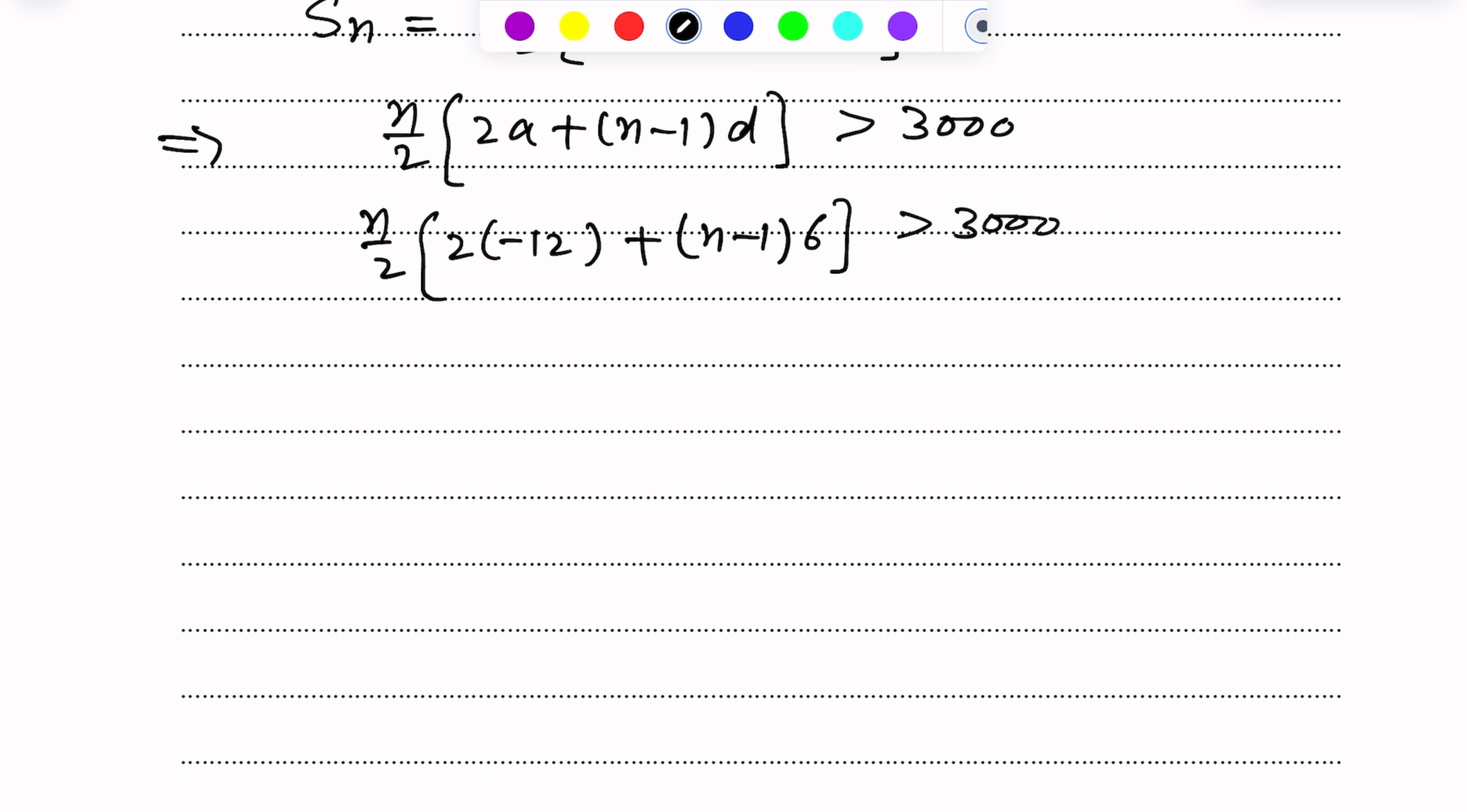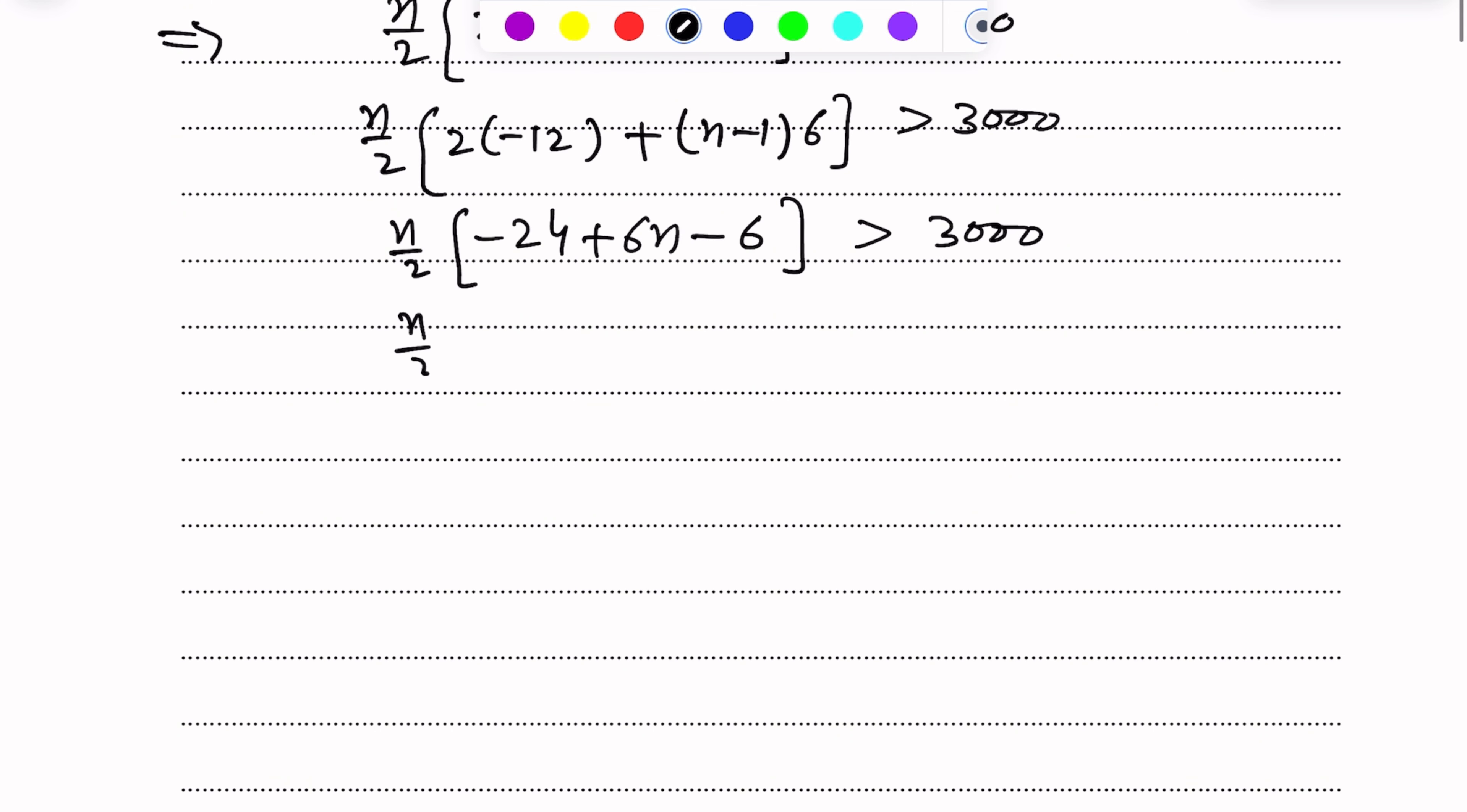Left-hand side to simplify, n over 2 into minus 24, plus 6n minus 6 greater than 3000. N over 2, 6n minus 30 greater than 3000.